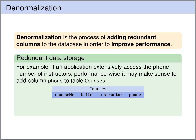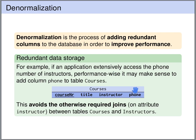Let's have a look at the example we've seen before. We have split the courses table and removed the phone number from it. We've introduced a separate table with the instructors and the phone number. If you have an application that makes heavy use of the phone number for particular courses, then it makes sense to add the phone number back into this table if we really cannot afford the performance overhead of the necessary join operations.